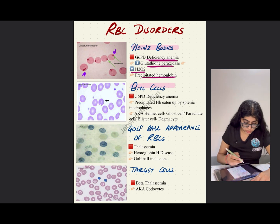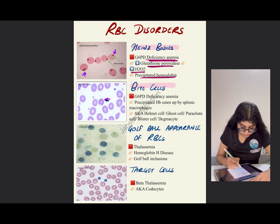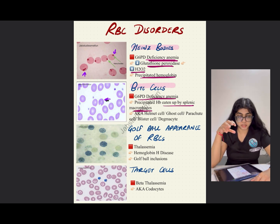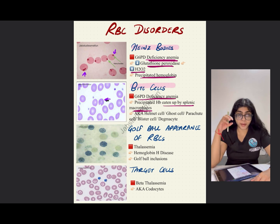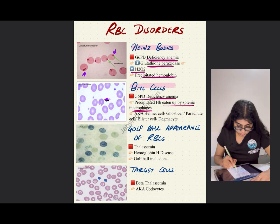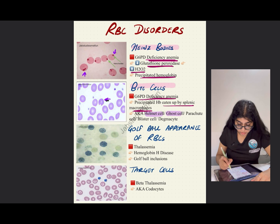Next are bite cells, which literally look like a small bite is taken out of a cell. This is also seen in G6PD deficiency anemia. The precipitated hemoglobin is eaten up by splenic macrophages — first the Heinz bodies occur, then they go to the spleen where macrophages take a bite out of the cells where the Heinz body is present, resulting in a bite cell. It is also known as helmet cell, ghost cell, parachute cell, blister cell, and degmacyte.